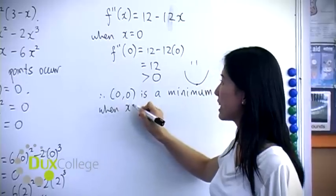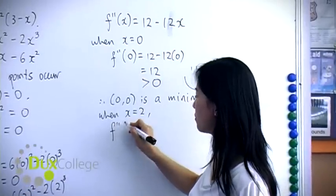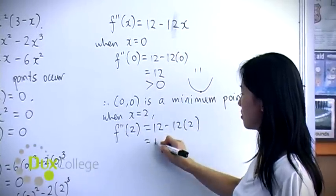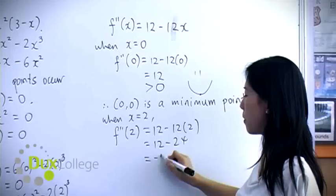Now when x = 2, then you substitute 2 into the second derivative. 12 - 24, which is equal to -12.